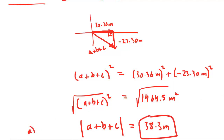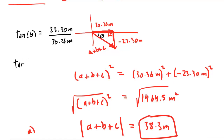For part B, we need to find this angle. If we look carefully, the tangent of that angle equals the opposite side, which has a magnitude of 23.30 meters, divided by the adjacent, which is 30.36 meters. Notice we're using the positive value of 23.30 — we basically want to keep our angles positive for the time being. So the tangent of the angle equals about 0.77, and the angle is the inverse tangent of 0.77, giving about 37.5 degrees on your calculator.